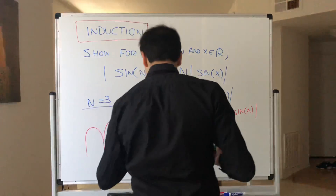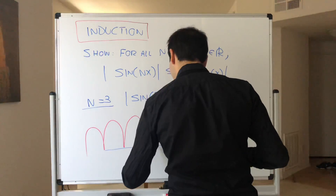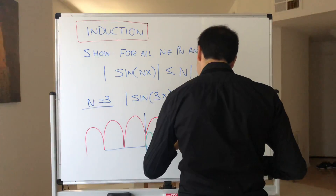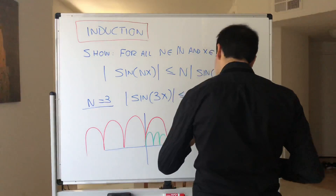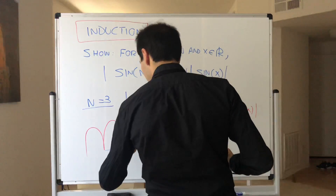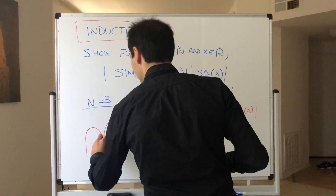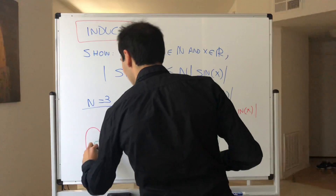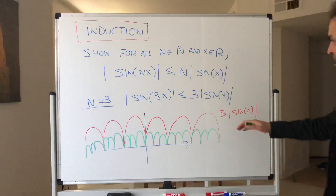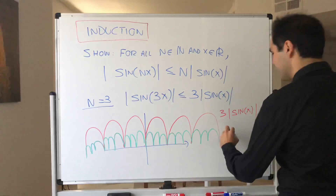Whereas absolute value of sine of 3x is not as big as sine of x, but it has zeros at multiples of pi over 3 — so 3 times as many zeros. So at least picture-wise it looks correct, and in other words, this function is bigger than this one.